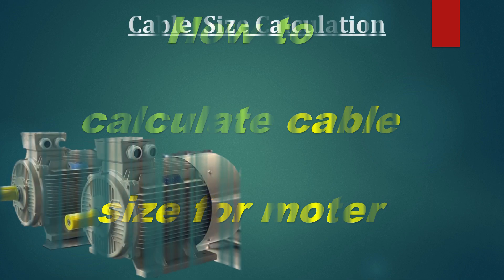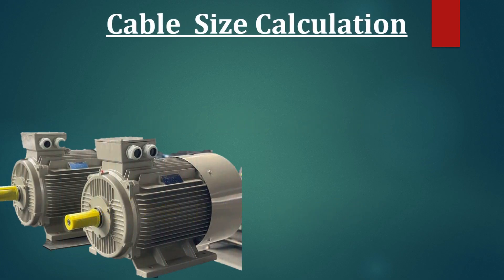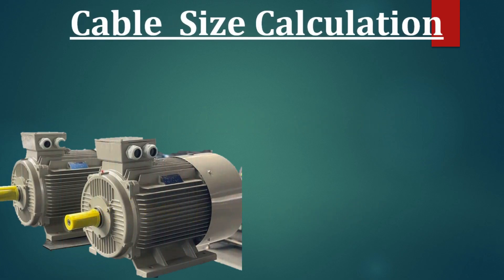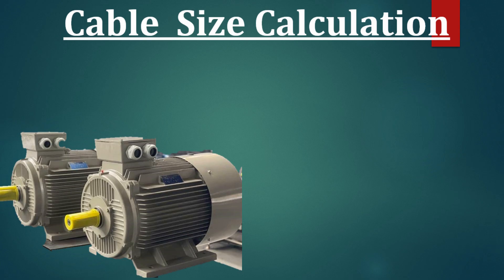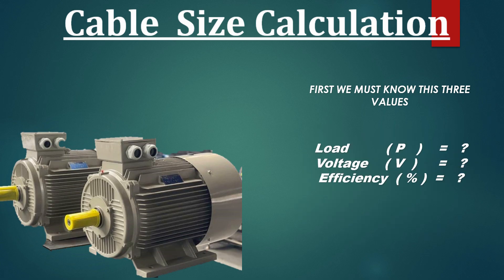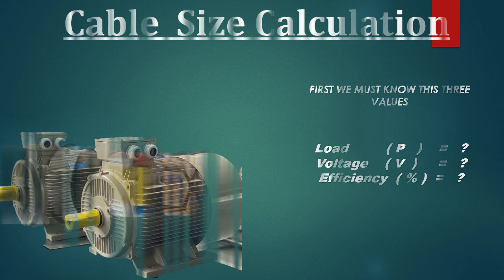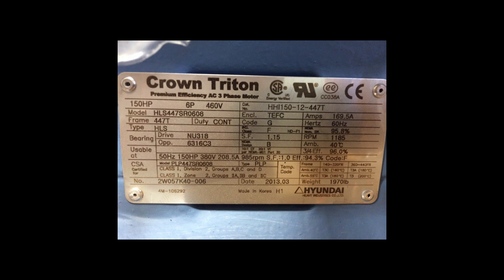To calculate cable size per motor, first we must know these three values: What is load? What is voltage? And what is efficiency of motor? Efficiency is always mentioned in motor name plates.